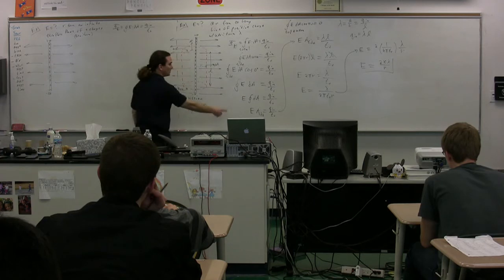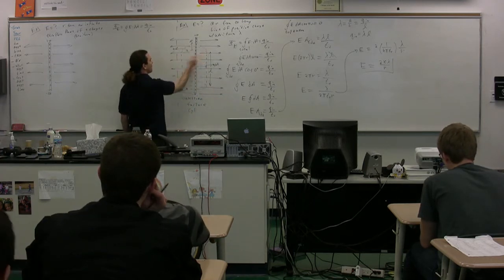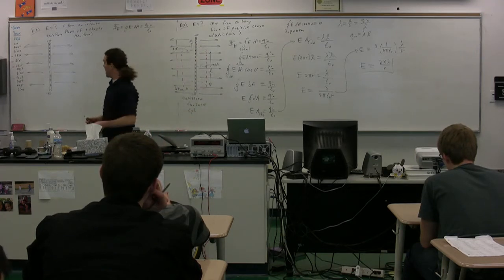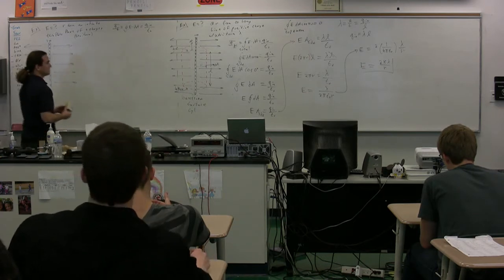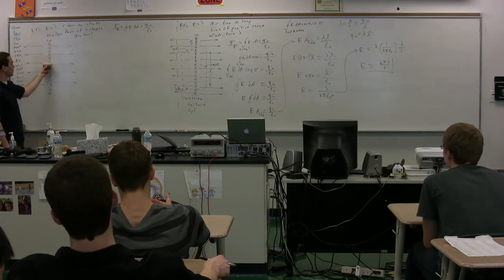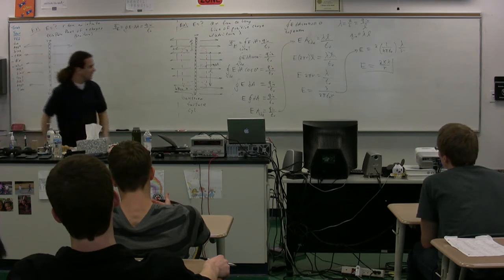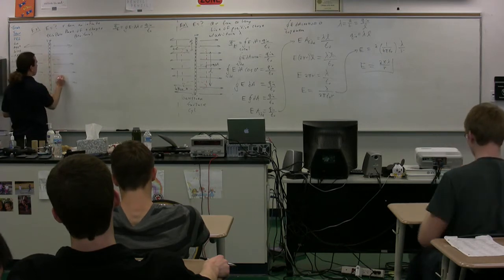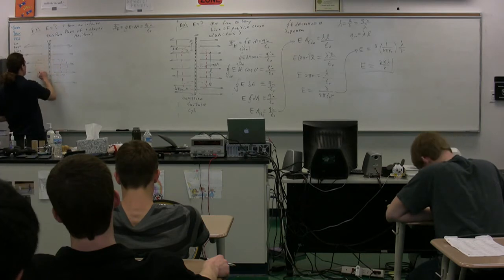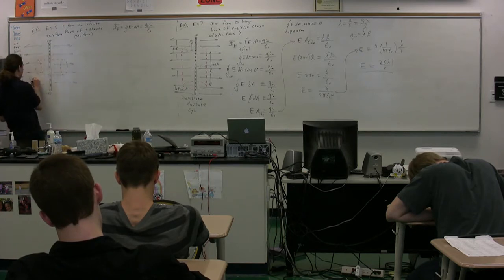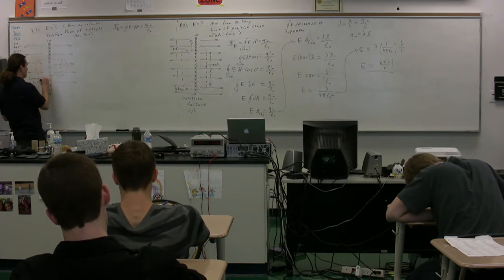Notice the electric field here was constant everywhere we were talking about the side of the Gaussian surface. So now we're going to pick a Gaussian surface that instead of being like this, is actually like this. I'm going to use a cylinder — which is, again, a cylinder in this particular case.